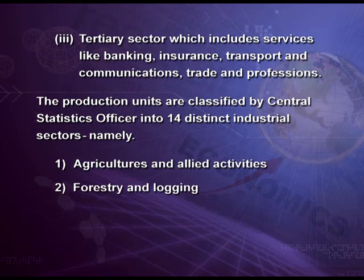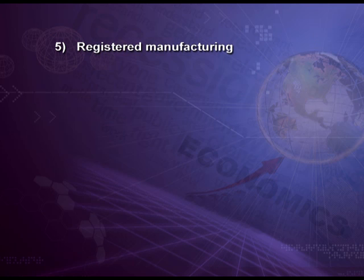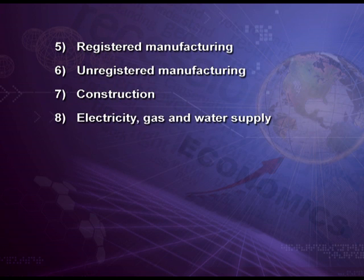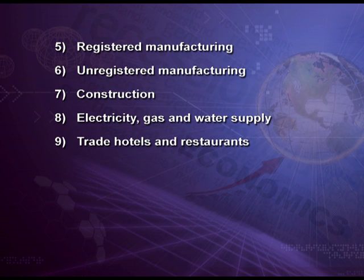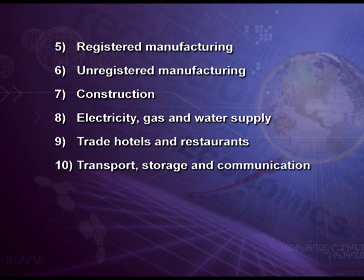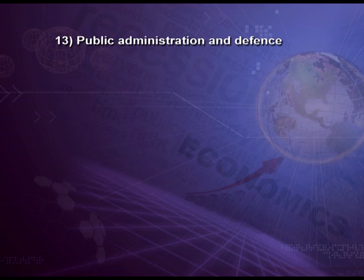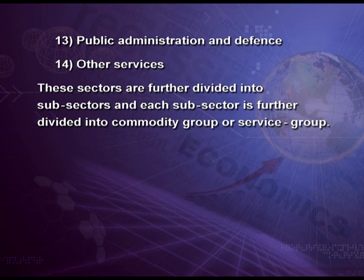These 14 categories are: first, agriculture and allied activities; second, forestry and logging; third, fishing; fourth, mining and quarrying; fifth, registered manufacturing; sixth, unregistered manufacturing; seventh, construction; eighth, electricity, gas and water supply; ninth, trade, hotels and restaurants; tenth, transport, storage and communication; eleventh, banking and insurance; twelfth, real estate, ownership of dwellings and business services; thirteenth, public administration and defense; and fourteenth, other services. These 14 sectors are further divided into subsectors, and each subsector is further divided into commodity groups or service groups.